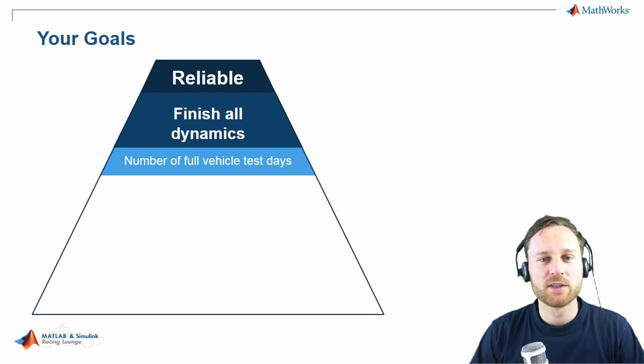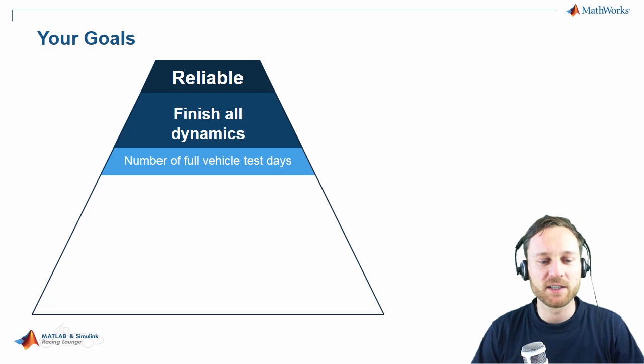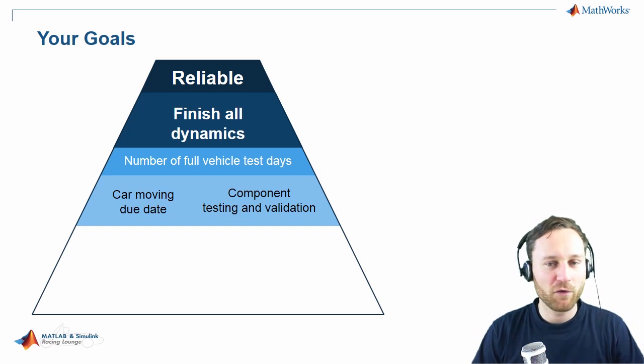A convincing answer could be, reliability for us means we want to finish all dynamics. I further ask, what does that mean? And you may see that graph here. Finishing all dynamic disciplines means you need quite some test days to test your full vehicle out on track.